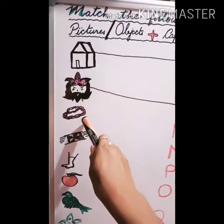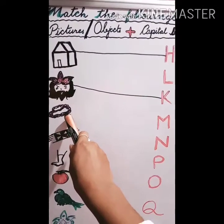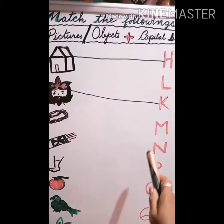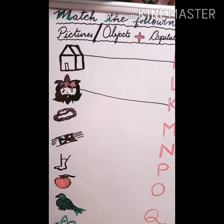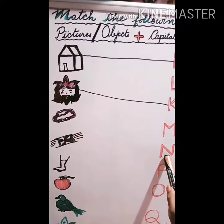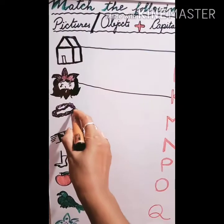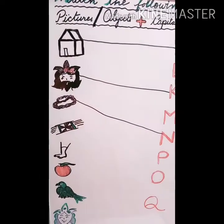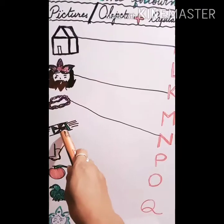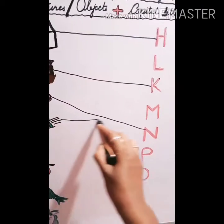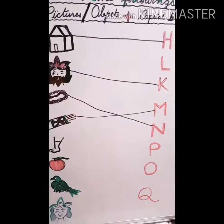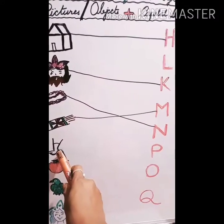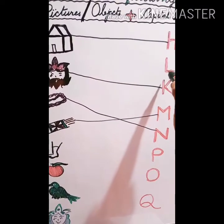Next is N for nest. Ask your child where is N — find out N. They will recognize it here. Then with the help of a ruler, add this. Next is M for mat. Next picture is L for leg — L is here.